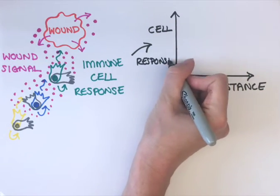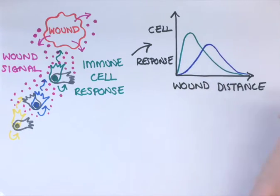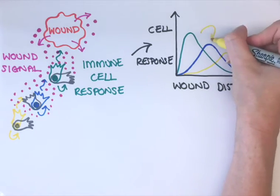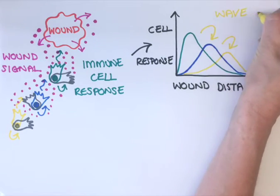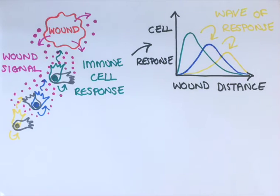As you'd expect, cells located closest to the wound respond earliest, and immune cells located progressively further away respond at successively later and later time points. This wave in immune cell response to the wound, with increasing distance and time, we think reflects the diffusion of the attractant signal away from the wound site.